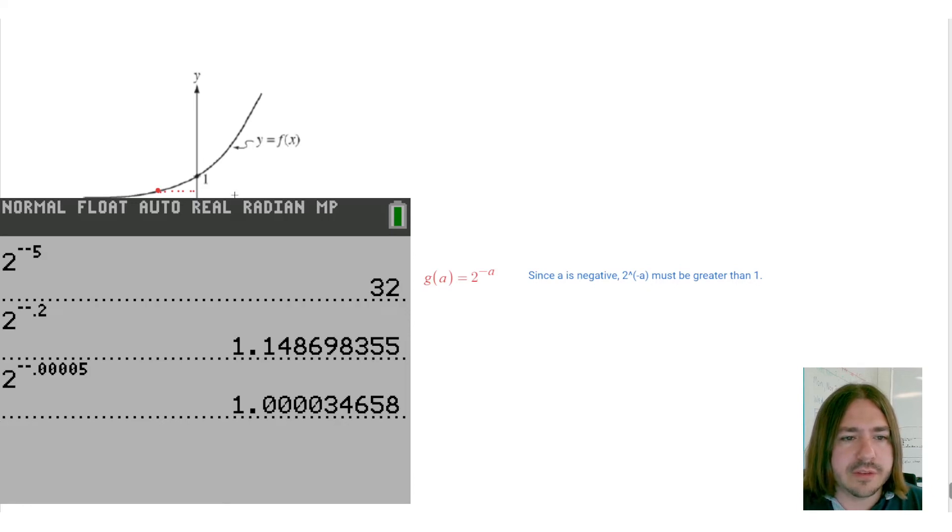Okay, so f of b, we can see, is going to be greater than 1, and that's about all we know. Okay, so we knew that f of a must be less than 1, and say f of b must be greater than 1. Okay, this one was greater than 1. All right, so g of b is going to be 2 to the power of negative b. Okay, so now, in this case, since b is positive, then this number has to be smaller than 1.